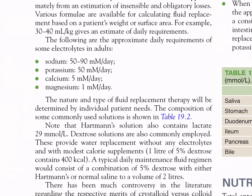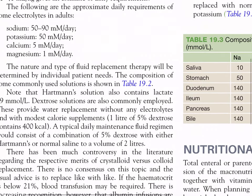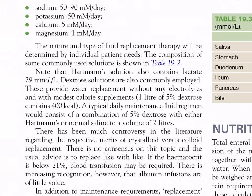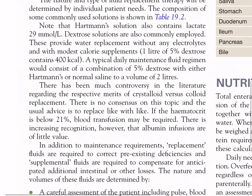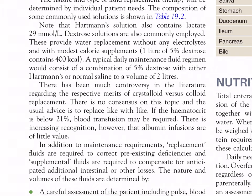The nature and type of fluid replacement therapy is determined by individual patient needs. The composition of commonly used solutions is shown in Table 19.2. Note that Hartmann's solution also contains lactate 29 mmol/liter. Dextrose solutions provide water replacement without electrolytes and with modest calorie supplements — one liter of 5% dextrose contains 400 kcal. A typical daily maintenance fluid regimen consists of a combination of 5% dextrose with either Hartmann's or normal saline to a volume of two liters. There has been much controversy regarding crystalloid versus colloid replacement, with no consensus; the usual advice is to replace like with like.